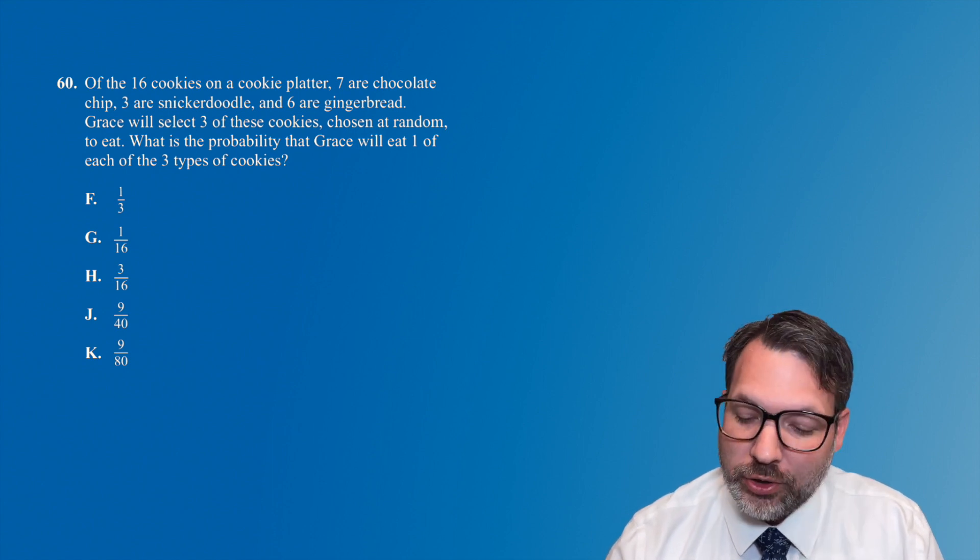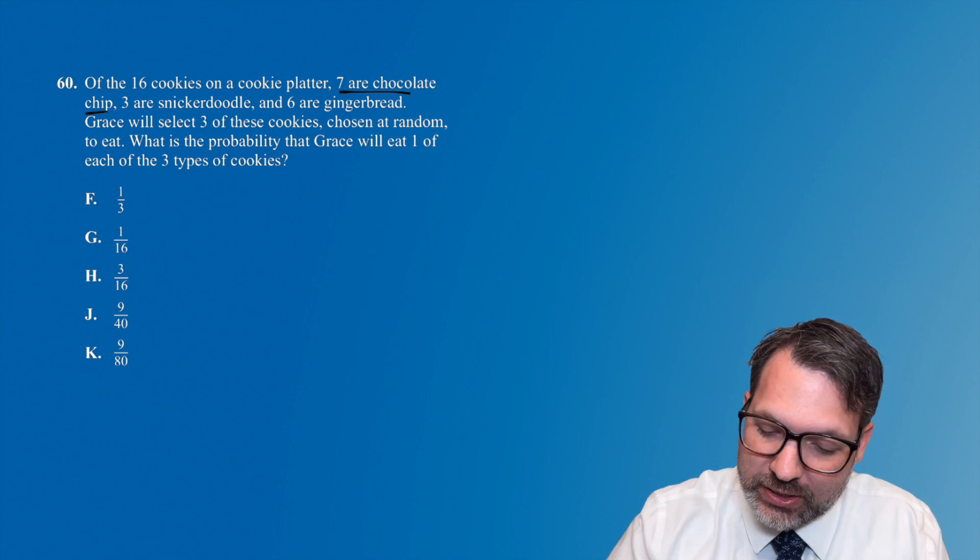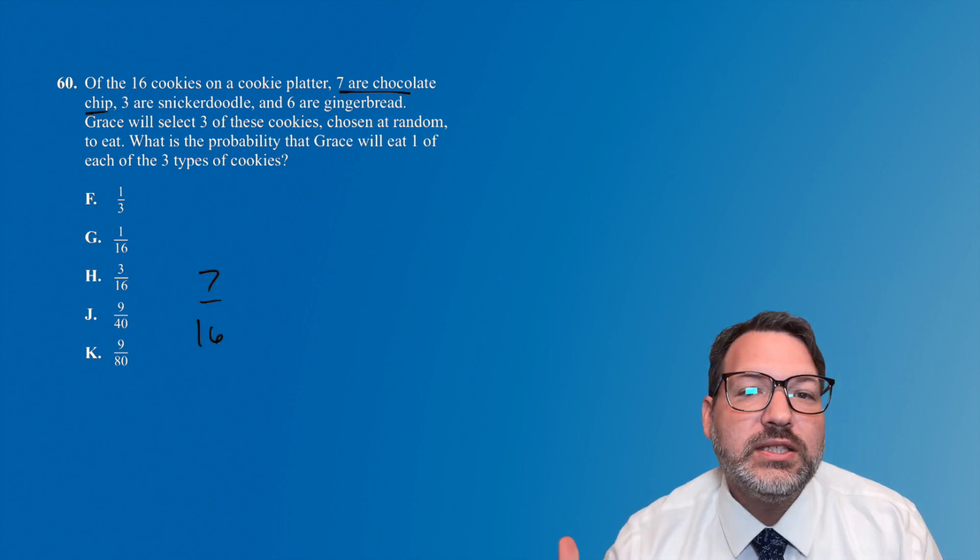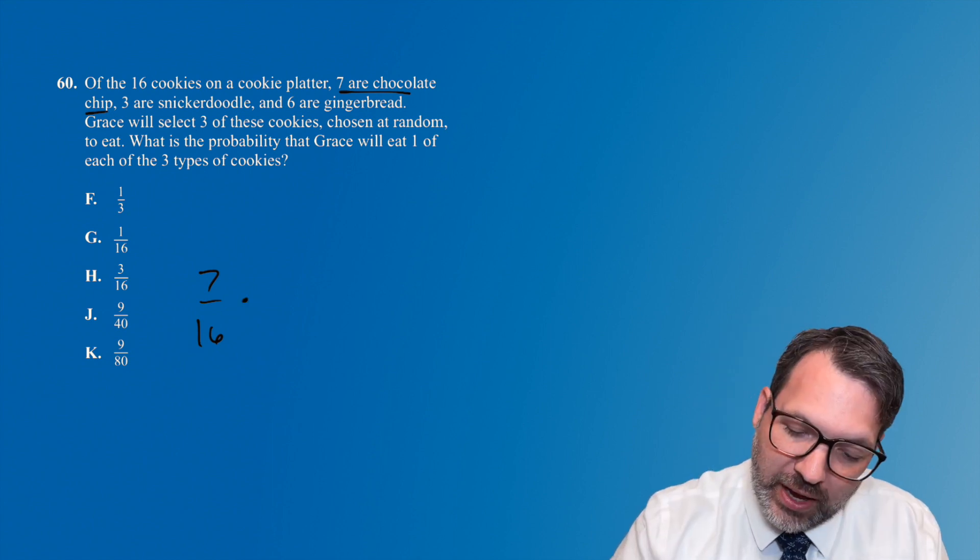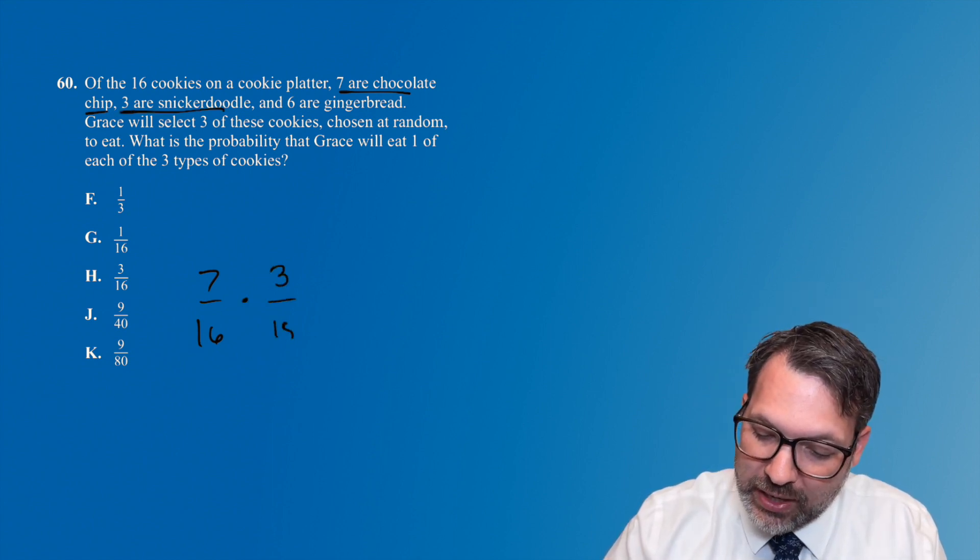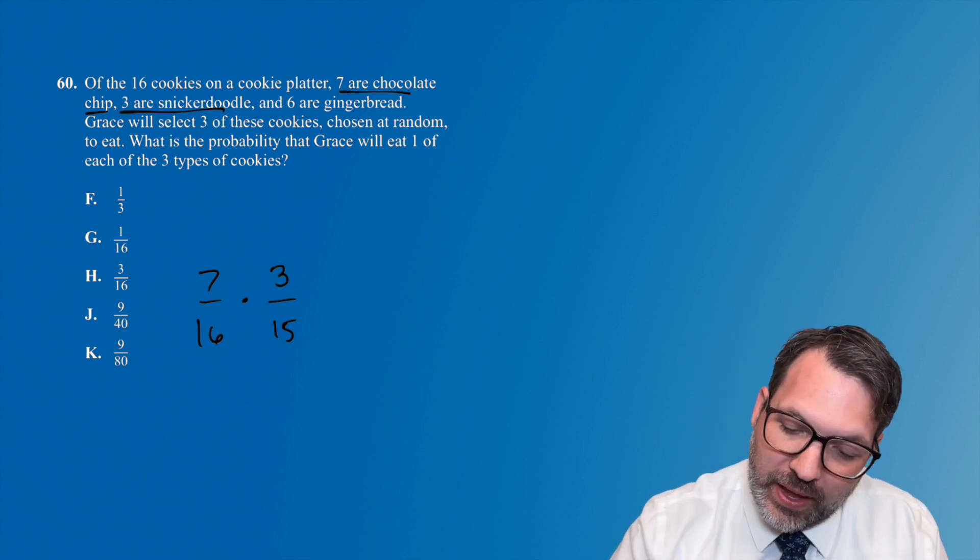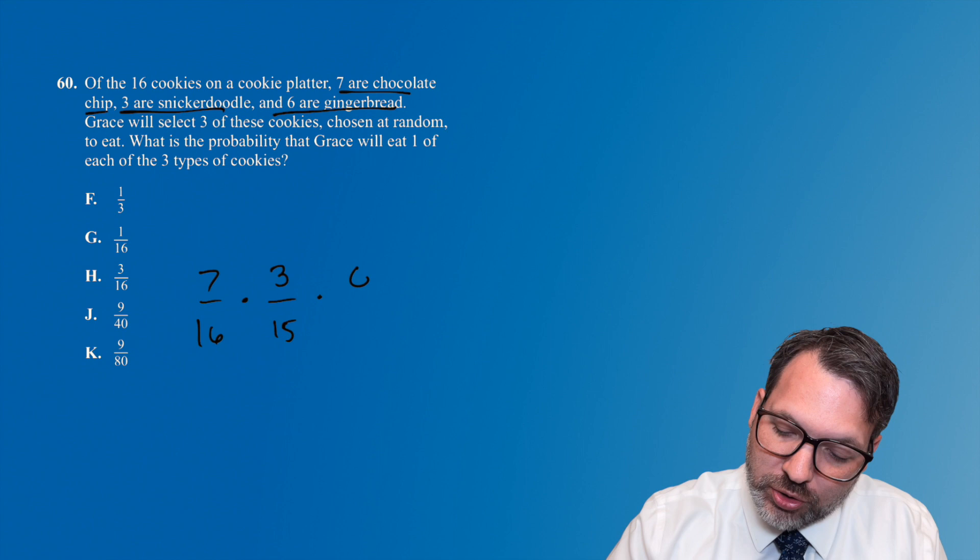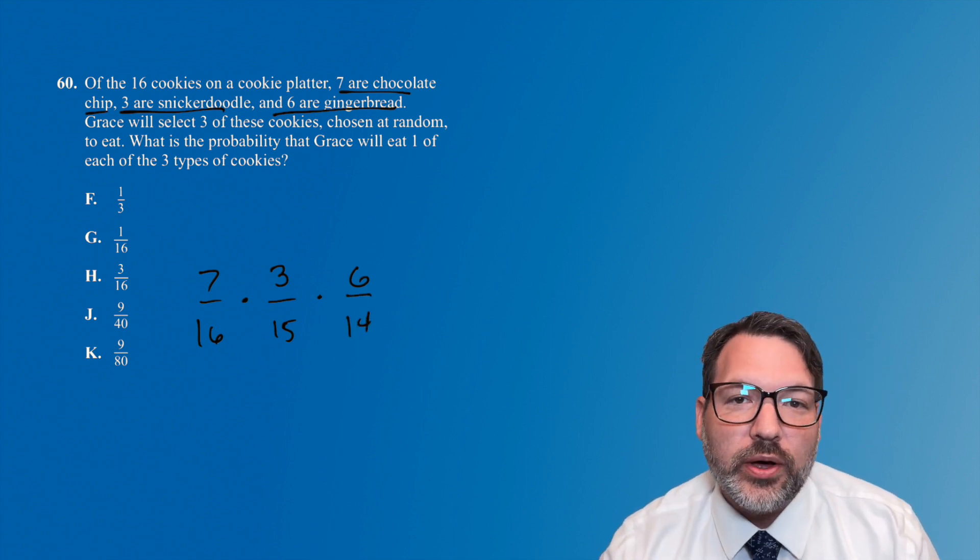Let's presume that first cookie is actually a chocolate chip cookie. It says there are seven such cookies, and so you could imagine that we have a 7 out of 16 chance of selecting that chocolate chip cookie. After that, we move on to the snickerdoodle. There are three of those, and now we only have 15 cookies left, because we already picked out a chocolate chip first. And then after that, we've got these six gingerbread cookies, but again, that's going to be 6 out of 14, because we've already picked two other cookies.